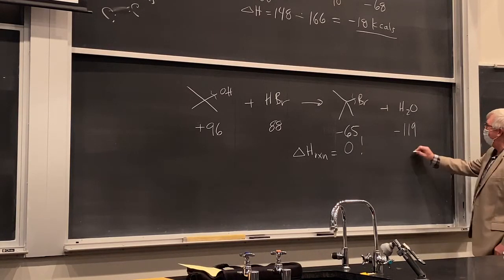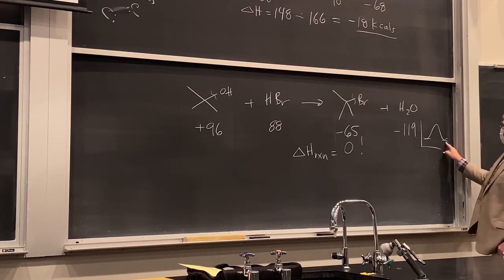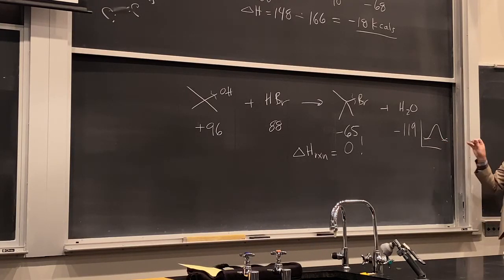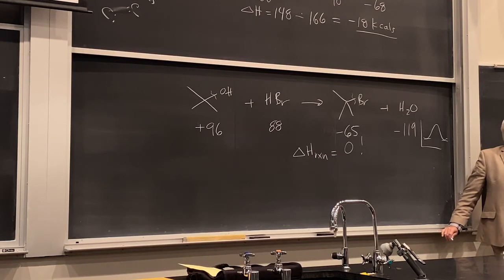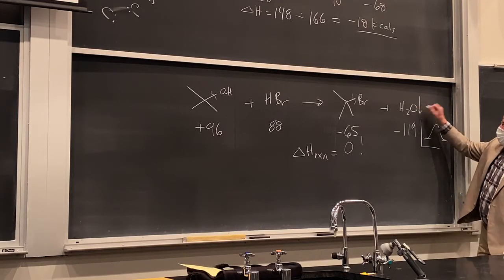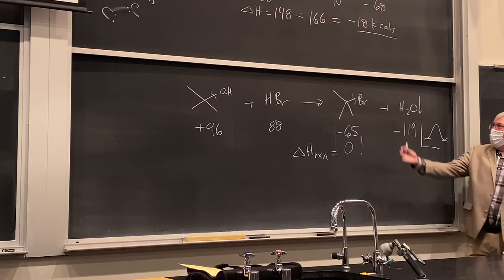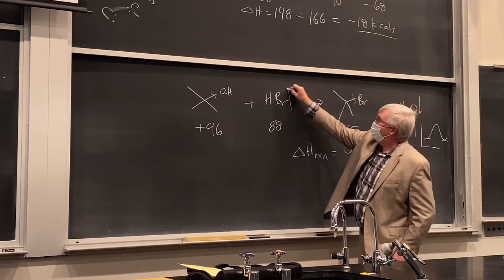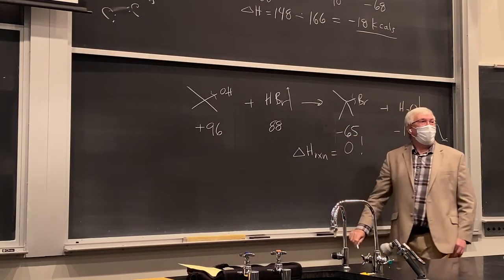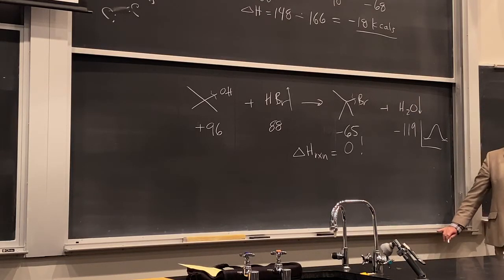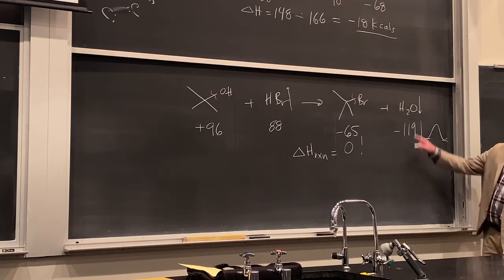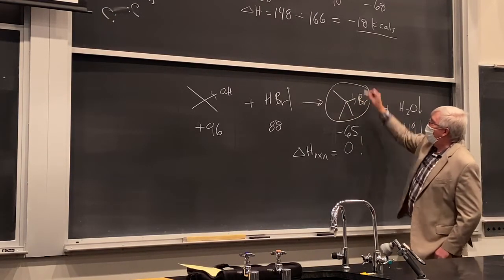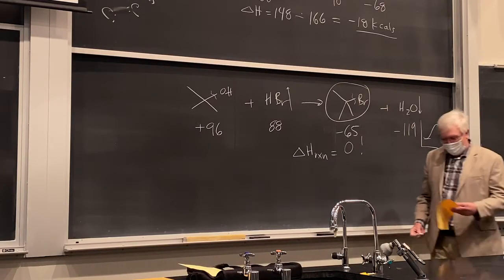Can we still make this reaction favorable even though ΔH ≈ 0? Yes — if we sequester the water or dehydrate it, by Le Chatelier's principle we'll bring over more product. Or we could use excess HBr. Le Chatelier, the famous French chemist, said that if you apply a shock to a system at equilibrium, it will adjust to maintain the equilibrium constant K. So here are some adjustments we can still use to get the product, even though the reaction is not exothermic.